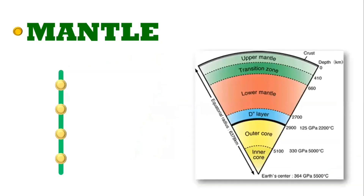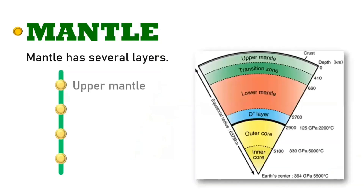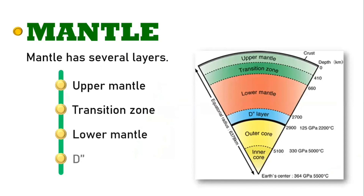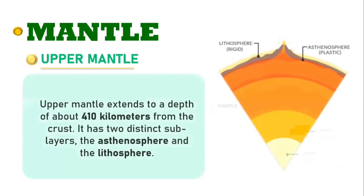The mantle has several layers: the upper mantle, the transition zone, the lower mantle, and the D double prime. The upper mantle extends to a depth of about 410 kilometers from the crust. It has two distinct sub-layers: the asthenosphere and the lithosphere.